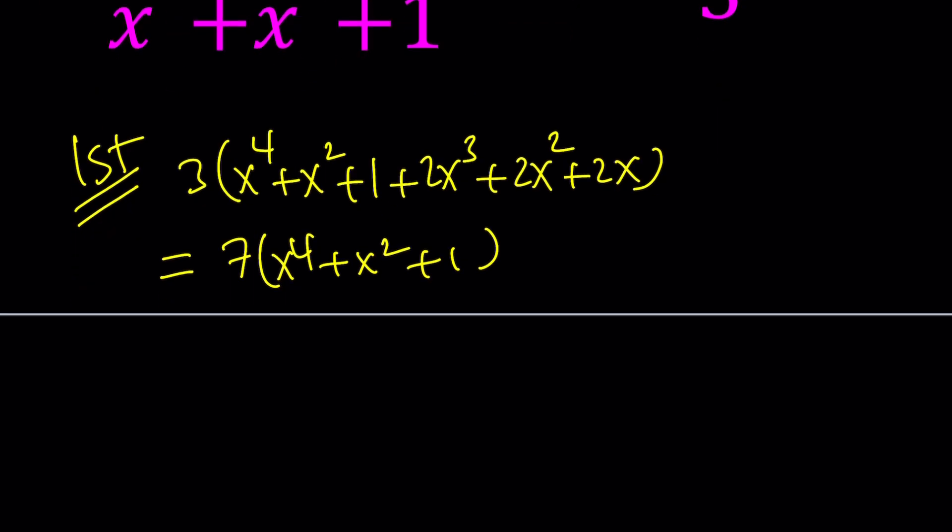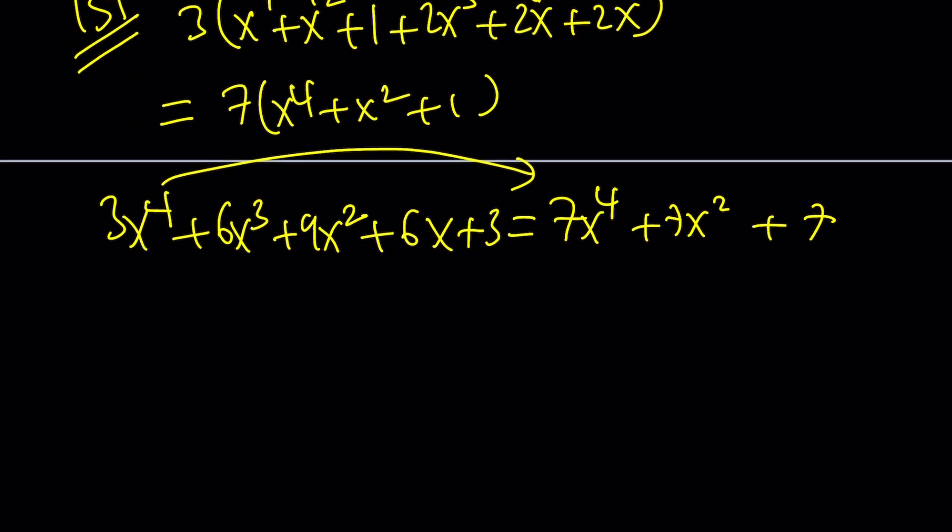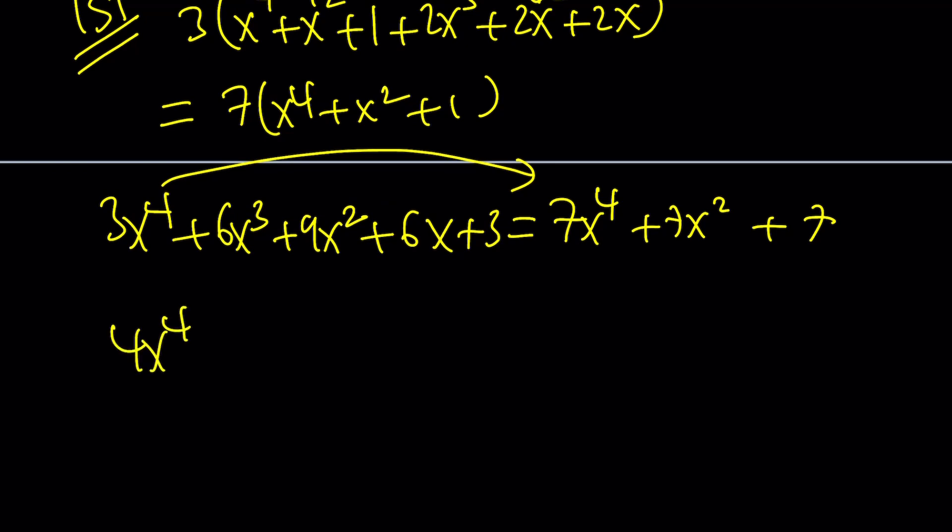Alright let's go ahead and combine like terms here. We have x squared plus 2x squared and that's going to be 3x squared. If you distribute it you're going to get 3x to the 4th plus 6x cubed plus 9x squared plus 6x plus 3, and that's equal to 7x to the 4th plus 7x squared plus 7. Let's go ahead and put everything on the right hand side. Subtract. You get 4x to the 4th minus 6x cubed, 7 minus 9 minus 2x squared minus 6x plus 4.